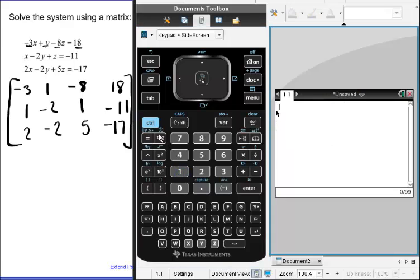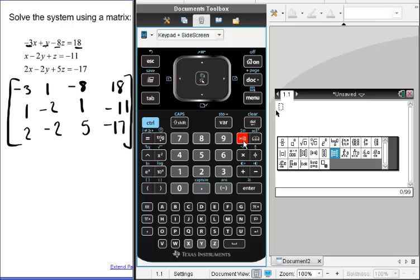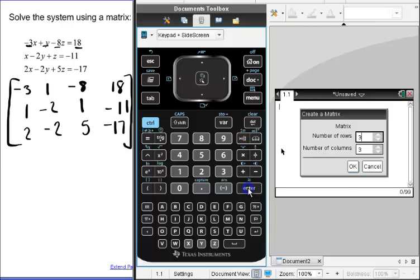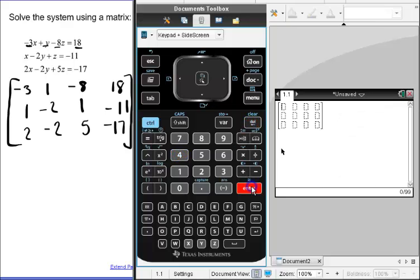The button right next to the book will allow us to build a matrix. It gives us the matrix option. It's already highlighted on mine, this center button. Choose that, and we want a matrix that has three rows and four columns.